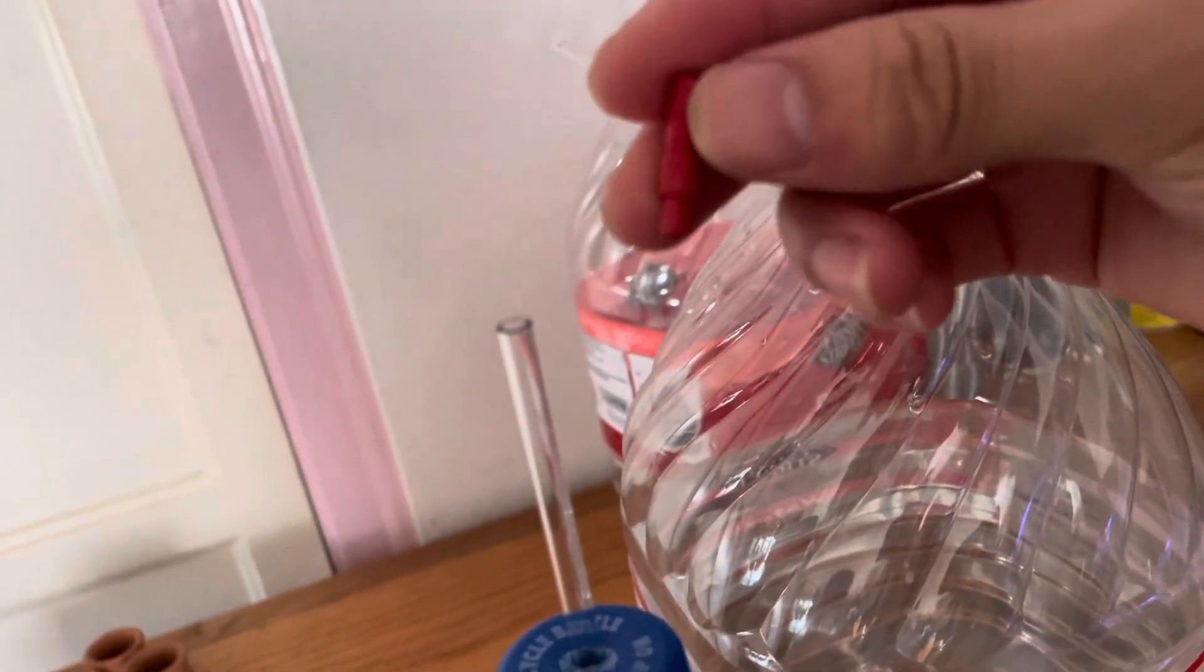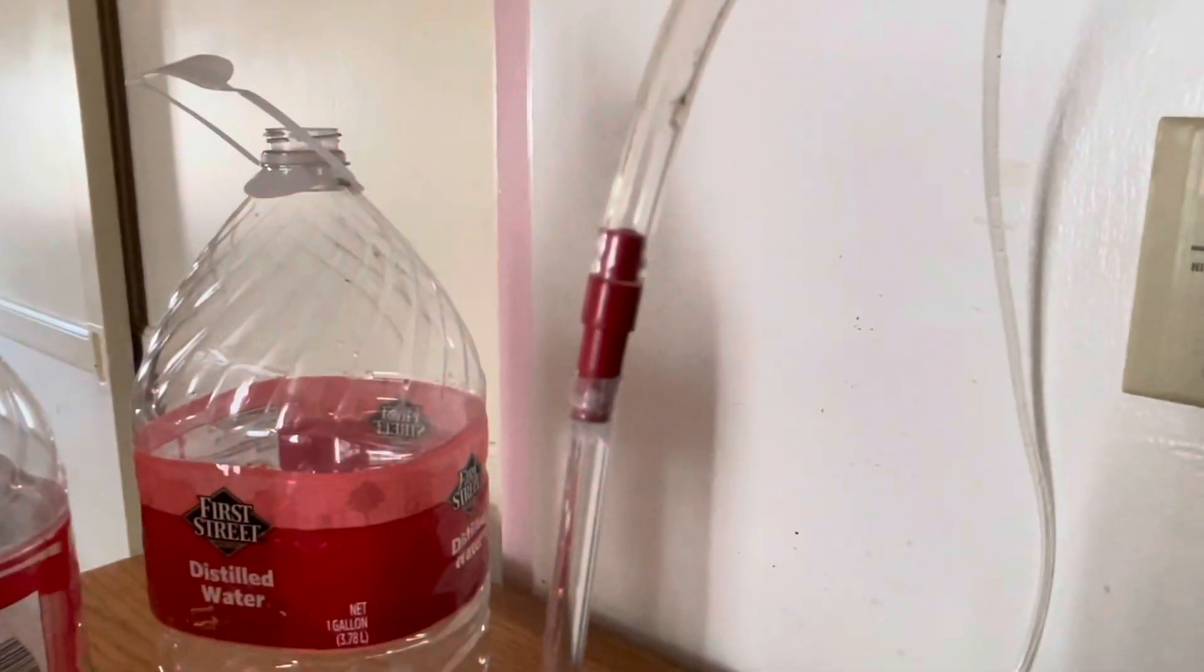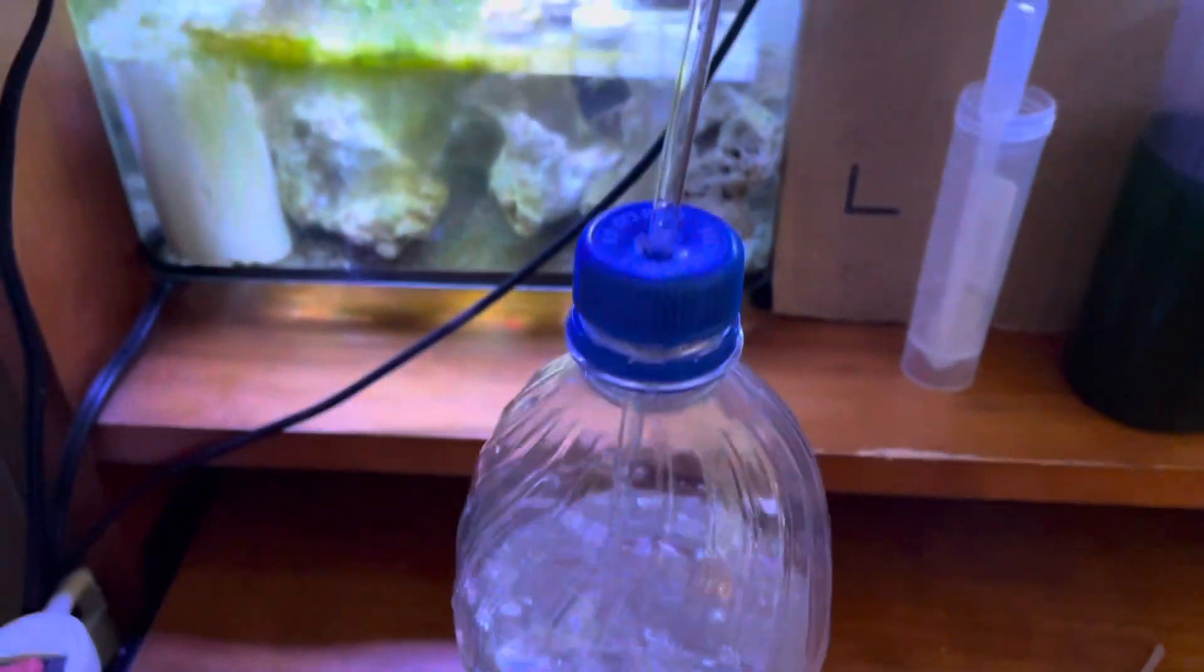Once all the steps and processes have been complete it's time to put together the culture. Here I've put the adapter to connect the rigid airline with the normal airline. Then you can connect the normal airline to the air pump. This could be plugged in and connected to the bottle.